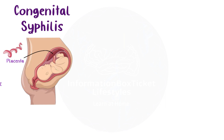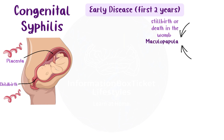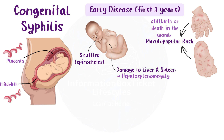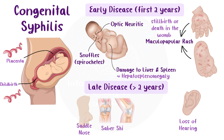Spirochetes can infect an infant with congenital syphilis through the placenta or through the birth canal during labor. During the initial two years of the disease, the outcome can vary from stillbirth or death in the womb to classic features of a maculopapular rash on the palms and soles of the feet, and snuffles — a condition where the nose becomes blocked due to increased secretions containing spirochetes. Infants may also have damage to their liver, spleen, or both, leading to hepatosplenomegaly, as well as eye problems such as optic neuritis. Classic characteristics of late illness, which manifests when the infant reaches two years of age, include hearing loss, saddle nose (a bony destruction of the nose), saber shins (a bowed tibia), and Hutchinson teeth (tiny notches in the teeth).